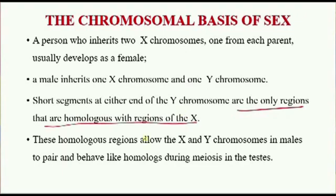These homologous regions allow X and Y chromosomes in males to pair and behave like homologues during meiosis in the testes. Of course, that is where the production of sex cells occurs in males.